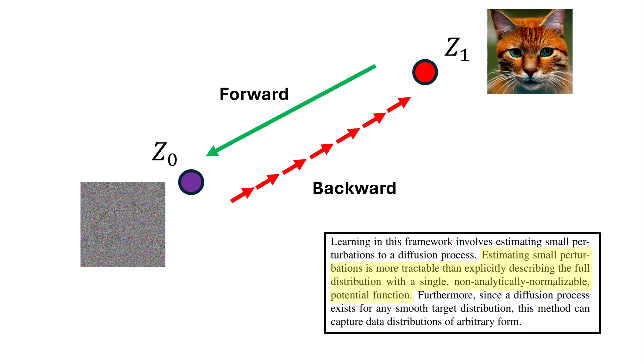Looking at this ODE equation, we see Z0, the noise image, which comes from the distribution pi0 — a set of all possible noise images. Then we have Z1, the actual RGB image (like a cat image), which comes from distribution pi1, the distribution of all actual RGB images. We can define a function v, the velocity field, that at each step t, given the point Zt, should equal the derivative of Z with respect to t.